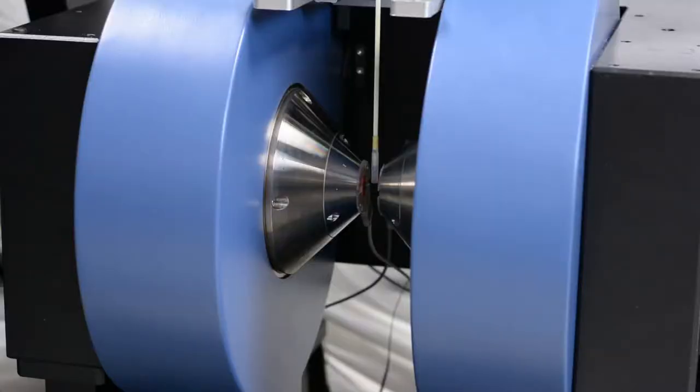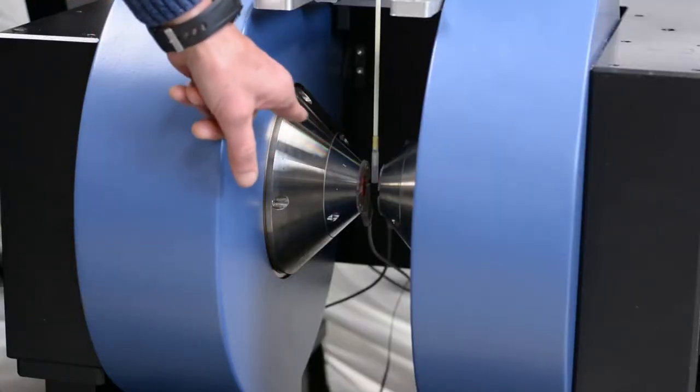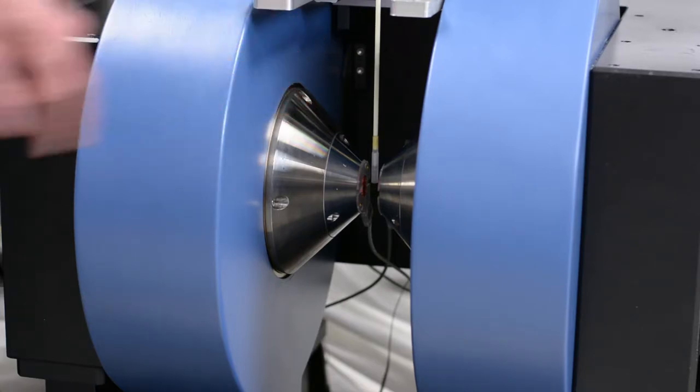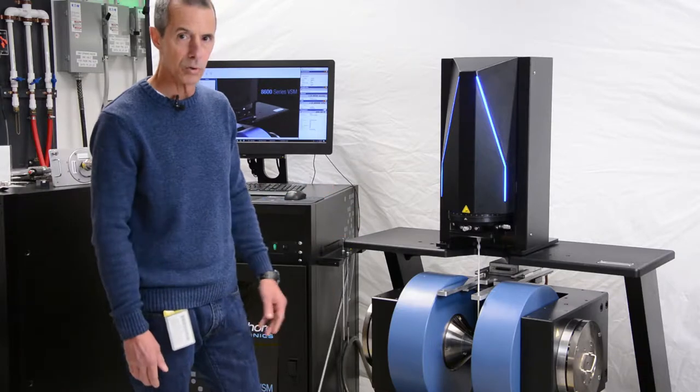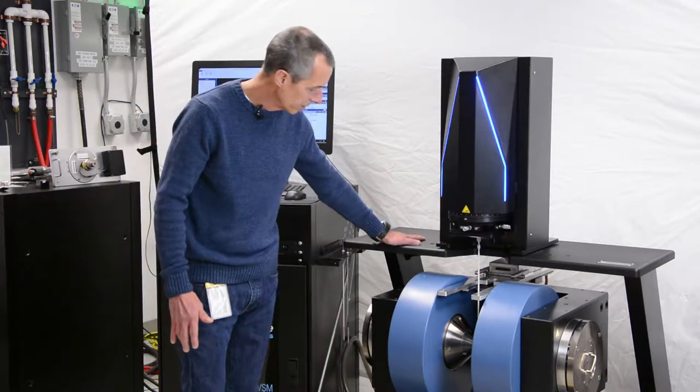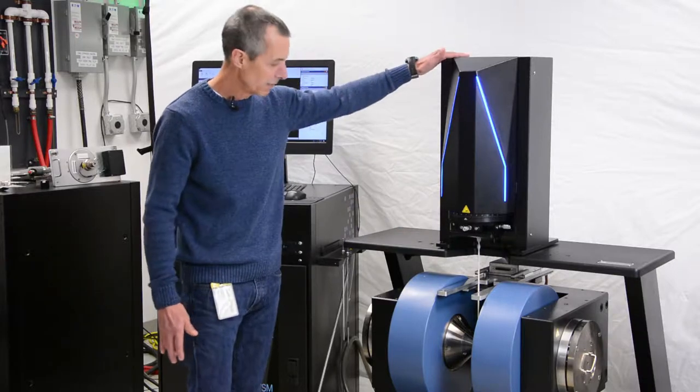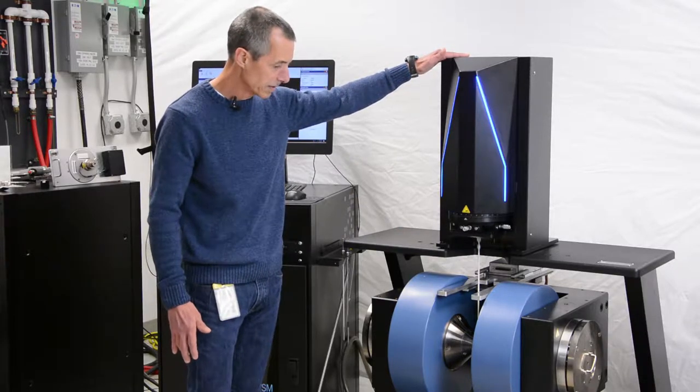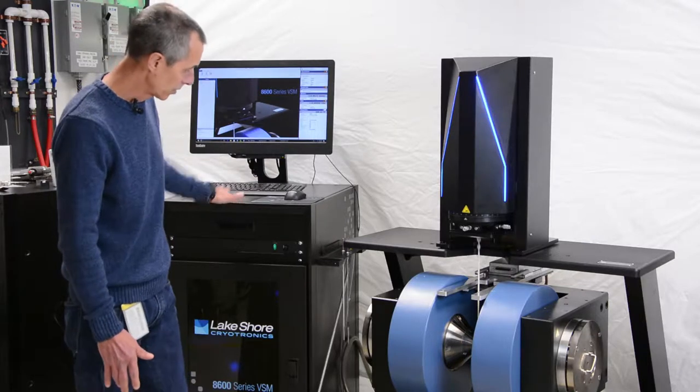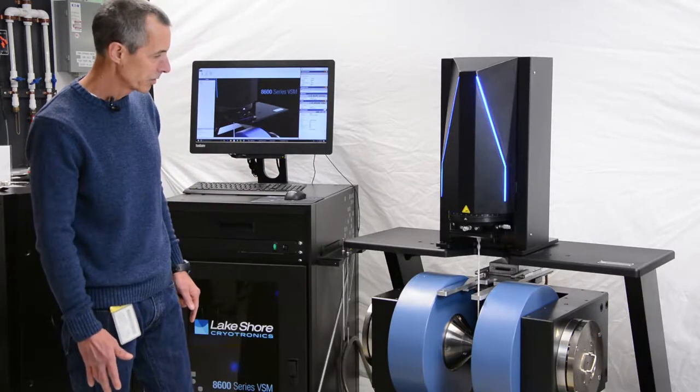They're tapered to a 2-inch pole face. Mounted on the pole faces are the VSM sensing coils as well as a hall probe for providing closed-loop control of the magnetic field. This is a vibration isolation frame to which the VSM head is connected. And this is the instrumentation console.